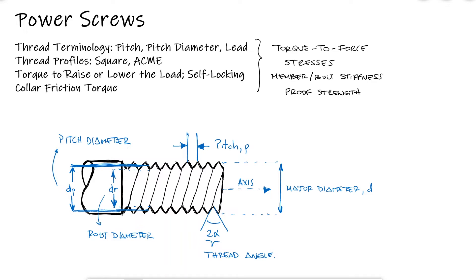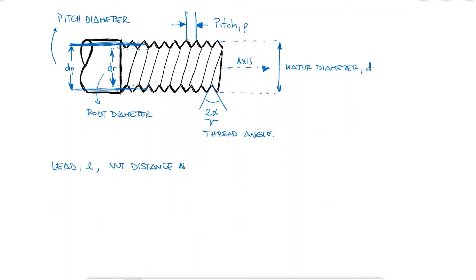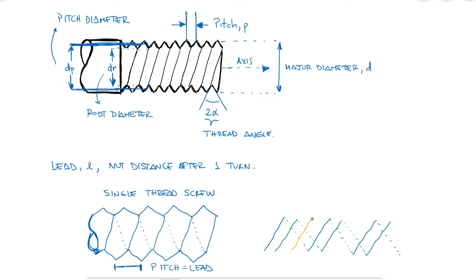The lead L is the distance a nut would move parallel to the axis of the screw when the nut is given one turn. For a single thread screw the lead would be the same as the pitch as one turn of the nut would make it advance from one crest to the next. But for multiple threaded screws, which you can think of as multiple strings around the cylinder, each one being a thread, the lead would equal the pitch times the number of threads as one turn to the nut would make it advance that many crests.